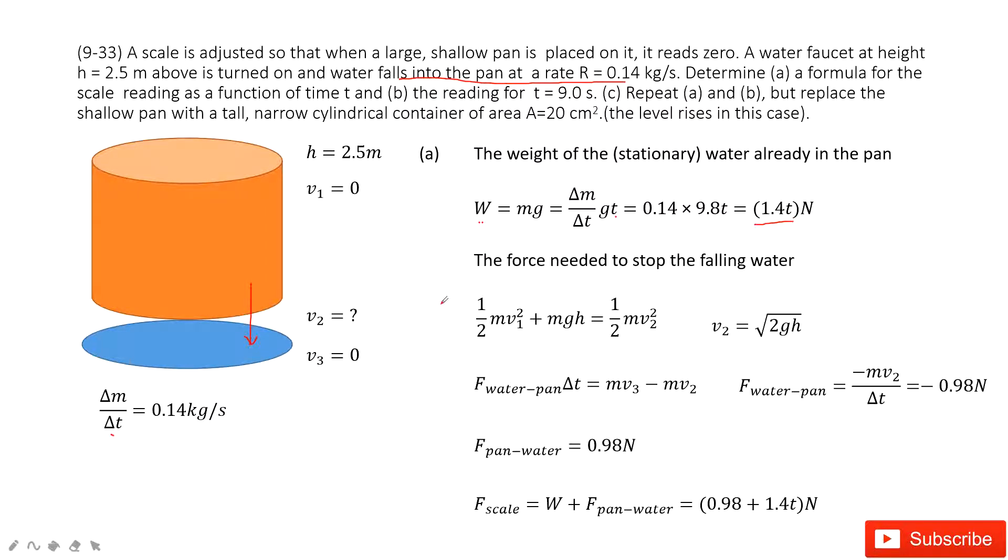Another thing is we need to find the force needed to stop the falling water. We can see the water from zero stationary to v₂ we don't know, and then when this water hits the pan, it gets stationary. So first thing we need to find is v₂.